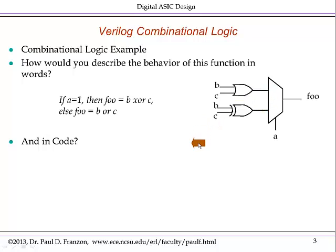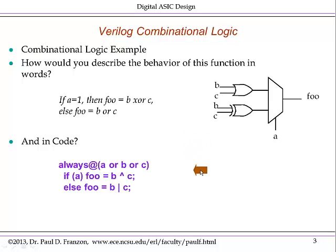You can see how that can become structured code in a formal language through a structure like this. Here again, we have the multiplexer as the IF-ELSE statement, the XOR gate represented with the caret, and the OR gate with a vertical bar. So we have: if A is implicitly true, FU equals B hat C for the XOR gate; else, if A is 0, FU equals B bar C for the OR gate.